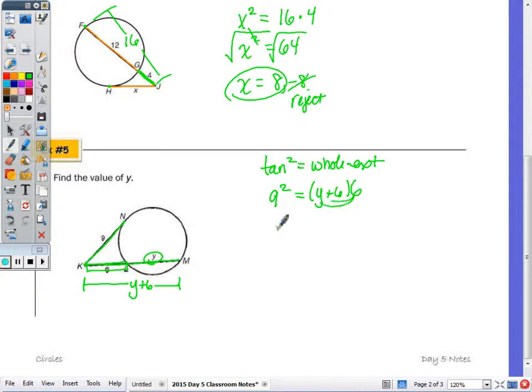Distribute. I get 81 is equal to 6y plus 36. Subtract the 36. 45 is equivalent to 6y. So I divide by 6, and y is equal to 7 and a half.